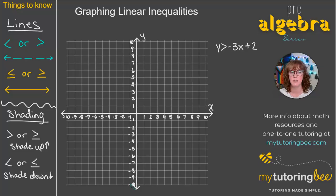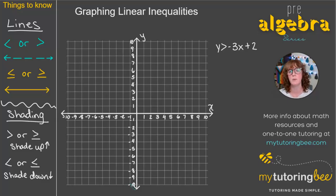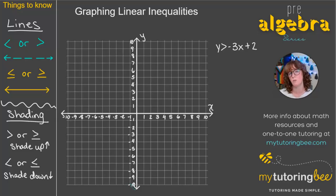In a previous video, which I will link in the description below, I go over how to graph linear equations — those are equations that have an equal sign. These are all going to be in slope-intercept format as well. We're going to graph inequalities pretty much the same way we do equations, but there are two differences.